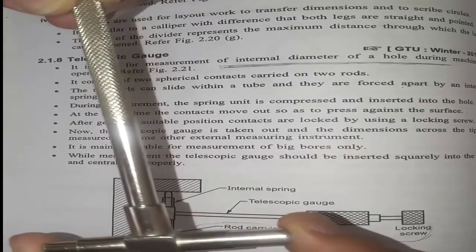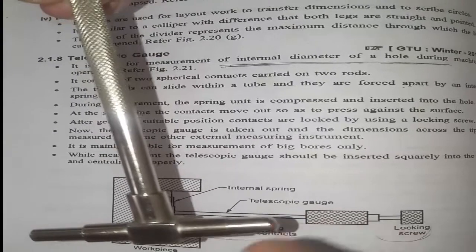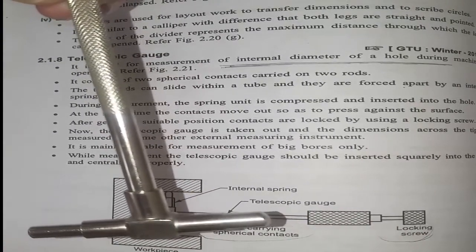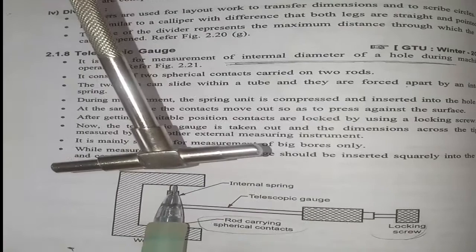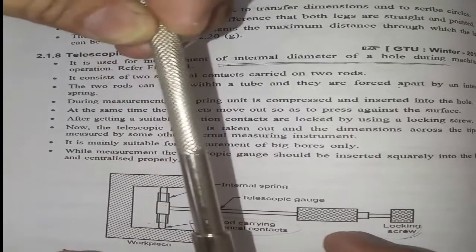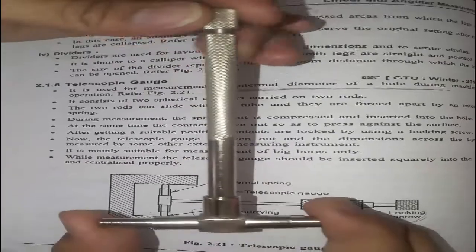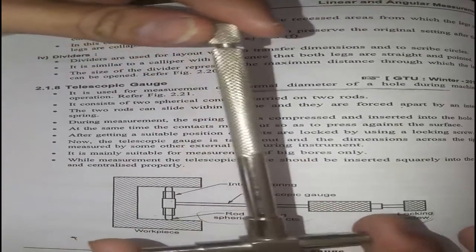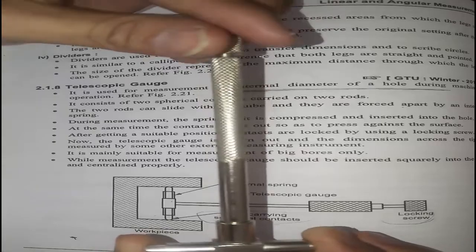The spherical points touch the inside of the cylinder. Now one more arrangement: the locking screw. Once you do this, you lock the screw.